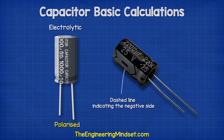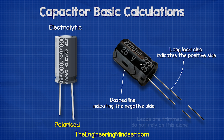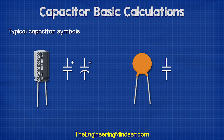On the side of the electrolytic capacitor, we find a dashed line which indicates the negative side. One lead is also longer than the other, which indicates the positive side. However, these are normally trimmed down during installation, so you shouldn't rely on this alone. These two capacitors are represented with symbols like these. Notice the polarized capacitor has a small plus symbol indicating the positive side.